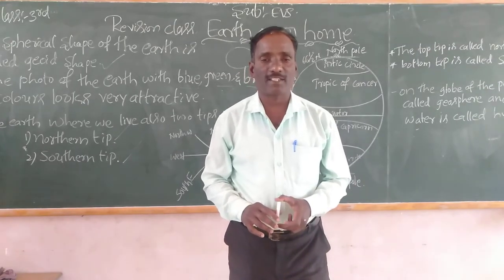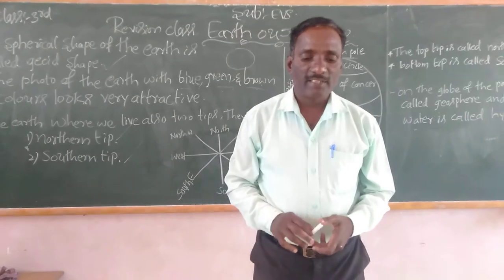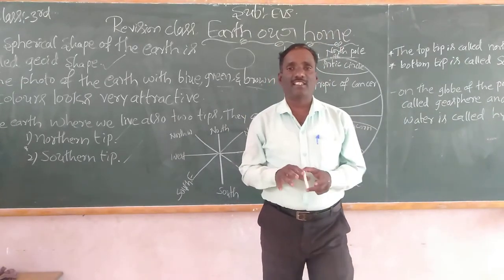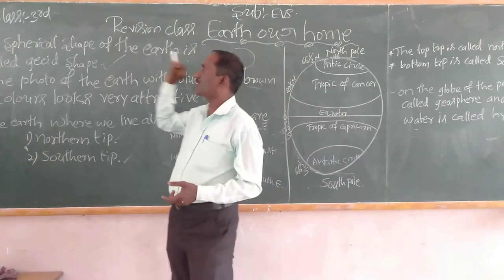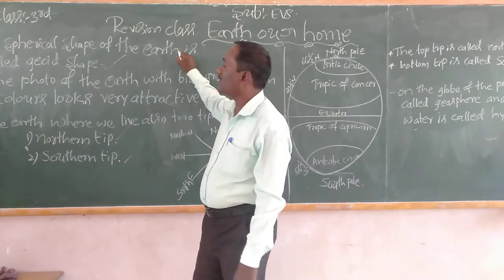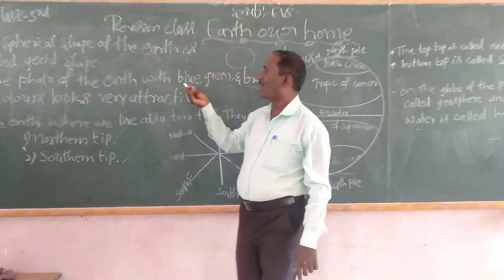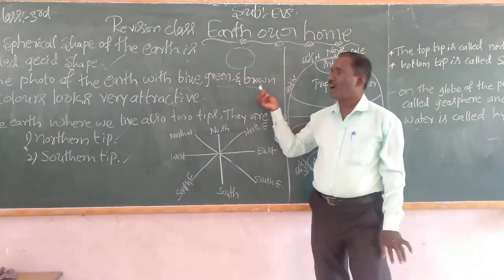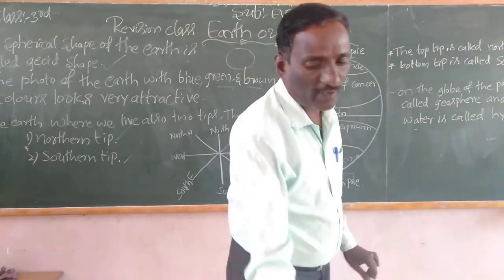Describe the shape of the sun, the moon, and the earth in the space given. The spherical shape of the earth is called Jeel shape. The photo of the earth with blue, green, brown colors looks very attractive.